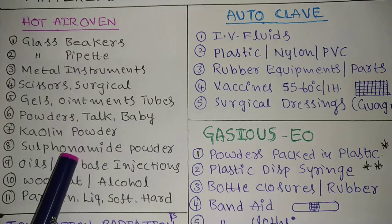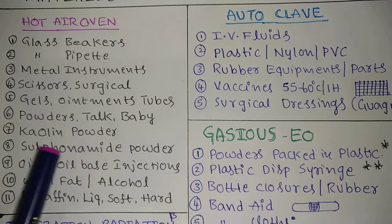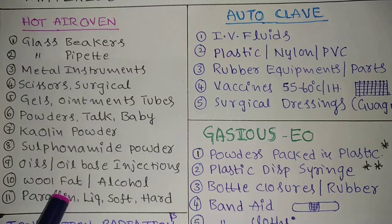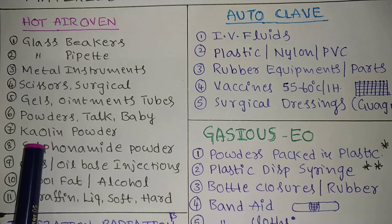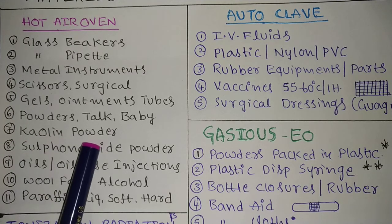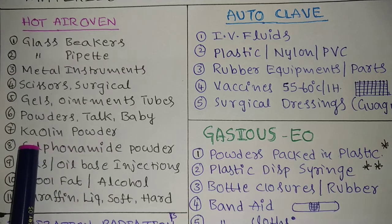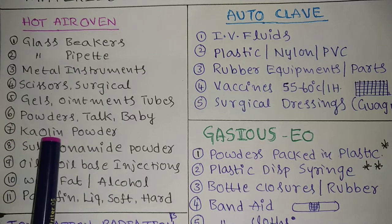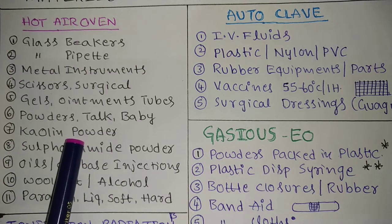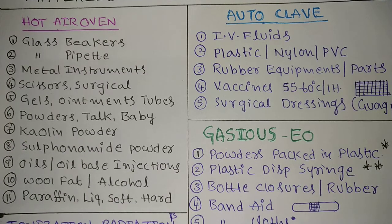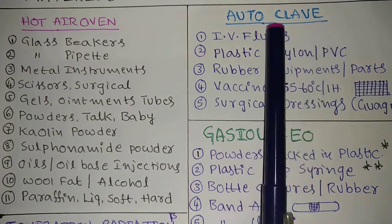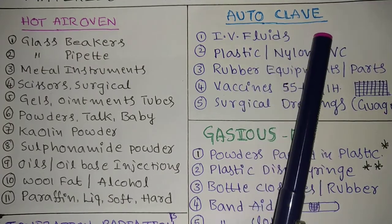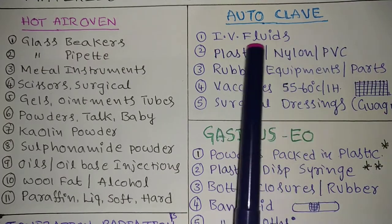All these items — each one has appeared in old question papers and competitive examinations. Sometimes they will ask in an indirect manner; for example, they will specify 'kaolin powder' by name, which may cause confusion. Don't get confused — know your category.